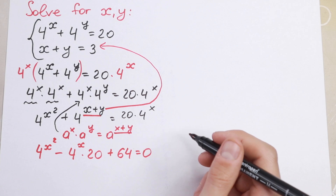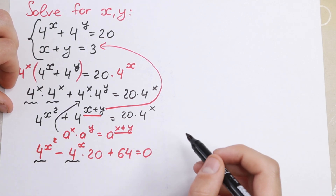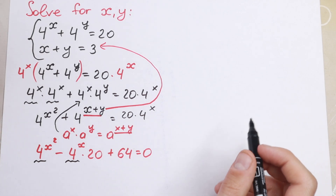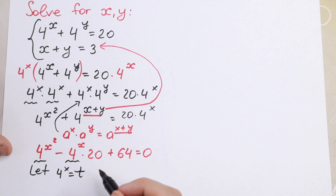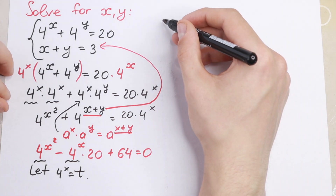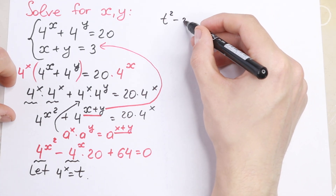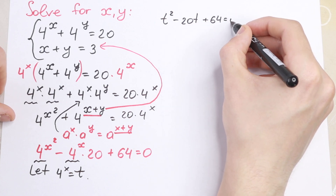We have 4 to the power x and 4 to the power x squared appearing in the equation, so we can use a substitution. Let t equal 4 to the power x. This makes it easier to work with.